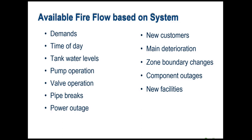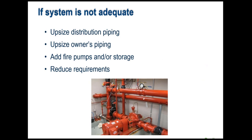When reporting available fire flow, be careful never to promise or guarantee a specific value. As shown, so many factors affect available fire flow from day to day — it's not a number cast in concrete. It will vary day to day, year to year, and over the long term as pipes corrode, facilities are added, or users increase. If you do find inadequate capacity, corrections can include upsizing distribution piping, upsizing piping on the owner's property, adding fire pumps or storage tanks, or reducing fire flow requirements. The model is a great tool for testing and designing those improvements.